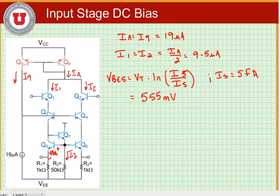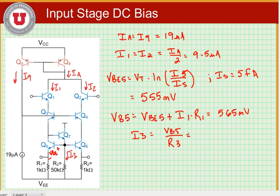We can find the base voltage by adding the emitter voltage to the base-to-emitter voltage, so we have VB5 is equal to VBE5 plus I1 times R1, which is equal to 565 millivolts. So I3 now is equal to VBE5 divided by R3, which is equal to 11.3 microamps.